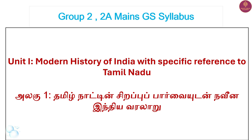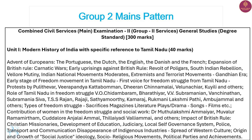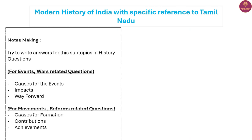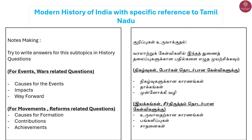Let's look at the two exams in Group 2 and 2A. Generally, we have 40 marks in Group 2 and 20 marks in Group 2A.